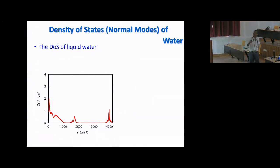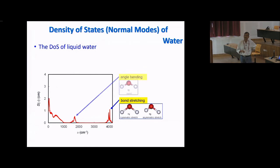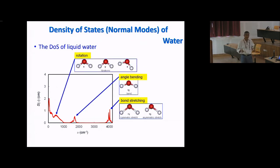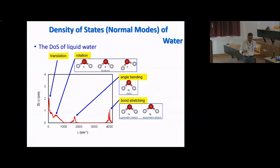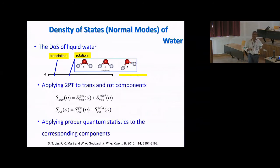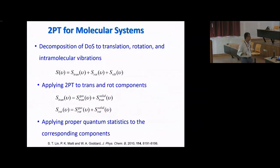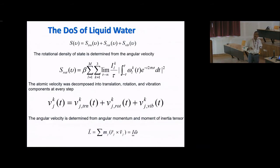Now I want to expand this method to molecular systems. For water, for which a lot of experimental data is available, the density of states shows distinct features: bond stretching modes, angle bending modes, vibrational modes, and translational modes. We can use this density of states to calculate the entropy and, because we have access to each mode separately, decompose the entropy into each component. This is the only method that gives such clear access to each entropy component.